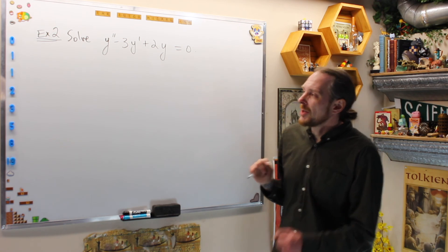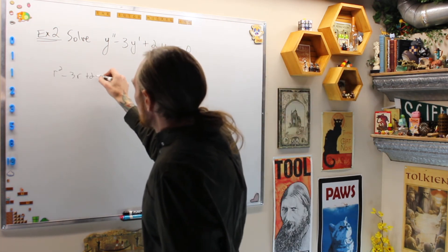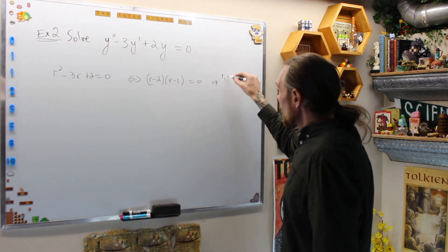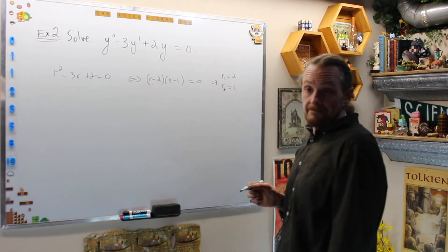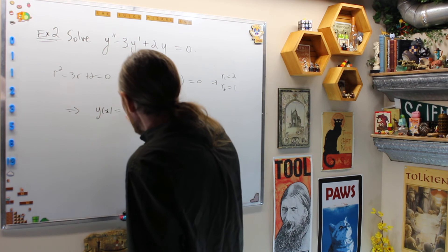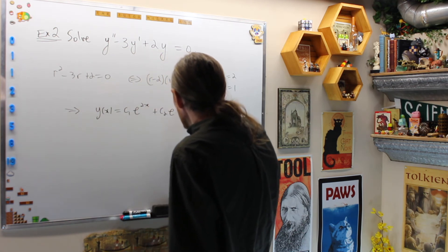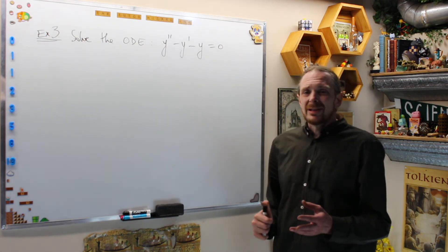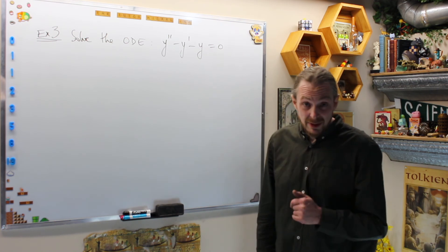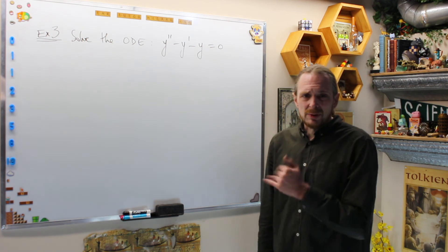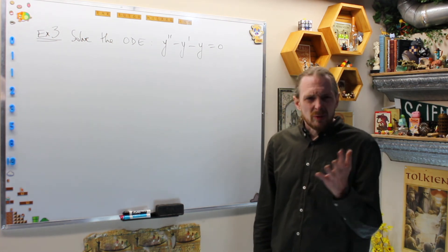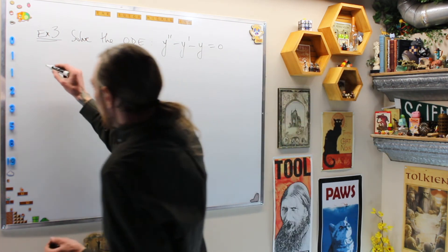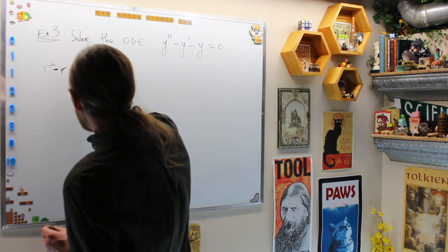Example 2: solve y'' − 3y' + 2y = 0. The characteristic equation is r² − 3r + 2 = 0, which factors as (r−2)(r−1) = 0. This gives two distinct real roots: r₁ = 2 and r₂ = 1. The general solution is y(x) = c₁·e^(2x) + c₂·e^(x). No initial conditions were given, so we leave the constants undetermined.